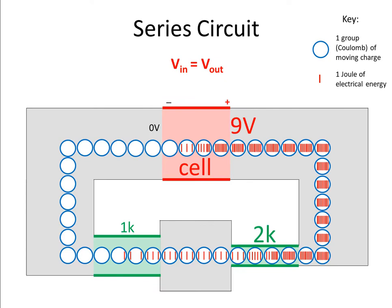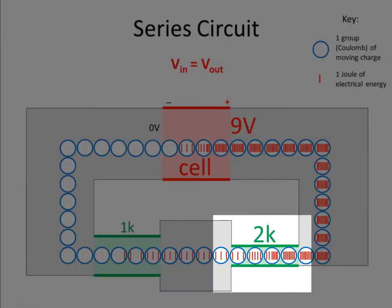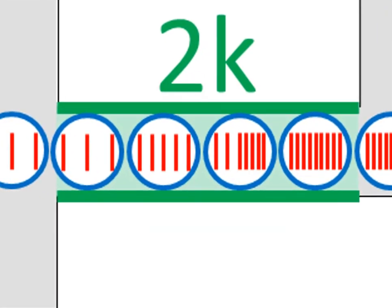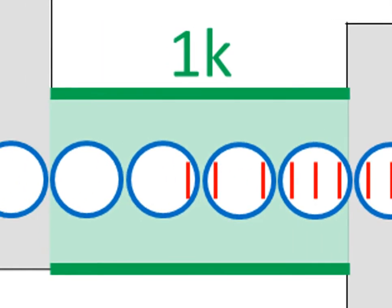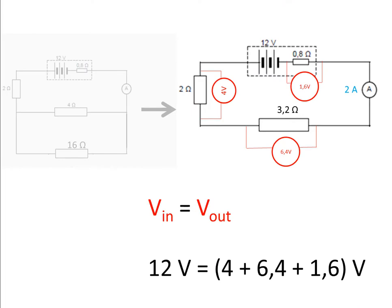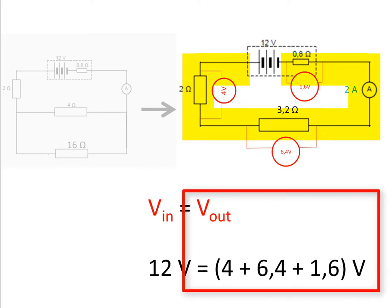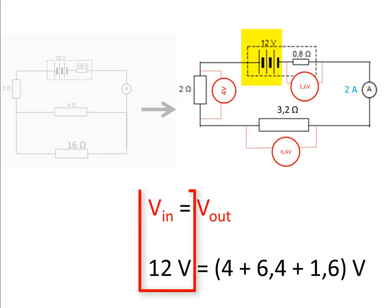So the voltage that the battery puts into the circuit must equal the voltage that the resistors take out of the circuit. Notice also that the more resistant resistor removes more voltage than the less resistant resistor — it is more difficult for the charges to move through, so they lose more energy fighting through it. The battery puts in 12 volts, and the resistors take out 4 volts plus 6.4 volts plus 1.6 volts — in other words, 12 volts total, just as much as the EMF put in.